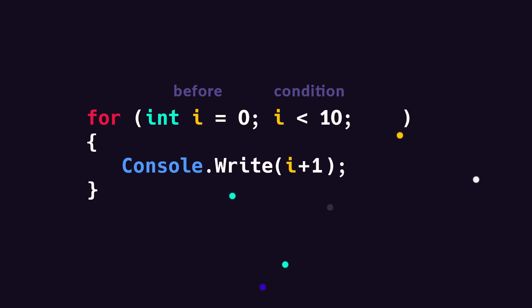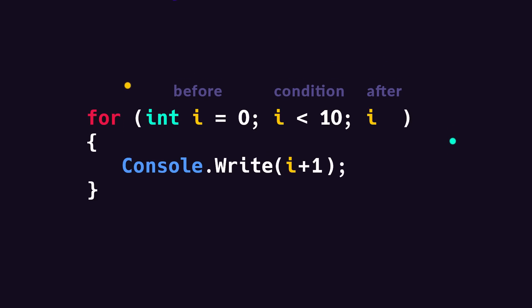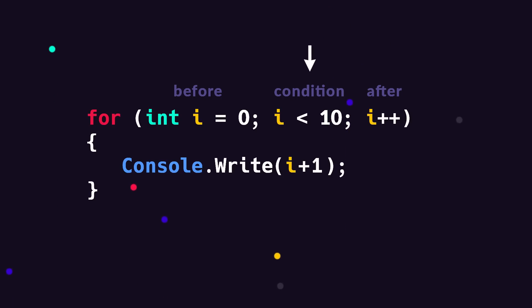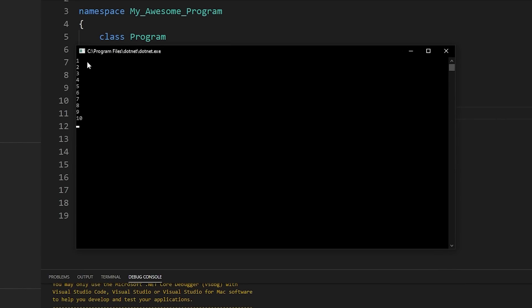Then finally, we need to tell the computer what happens after each loop. In our case, each time we've gone through the loop, we want to increase i by one. The shorthand notation for this is i++. So we're creating a variable called i, telling it to increment by one after each iteration, and we want to keep running the loop as long as i is less than ten. And that's it. If you run our program now, it prints out all the right numbers, but this is just counting to ten. We can do much cooler stuff by just changing the code inside of our for loop.